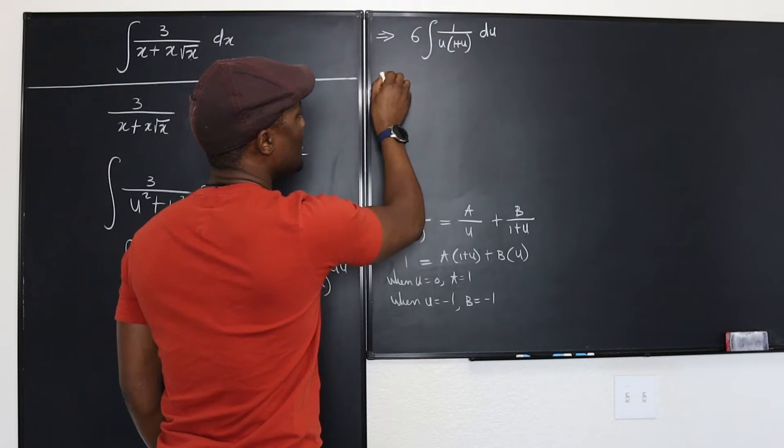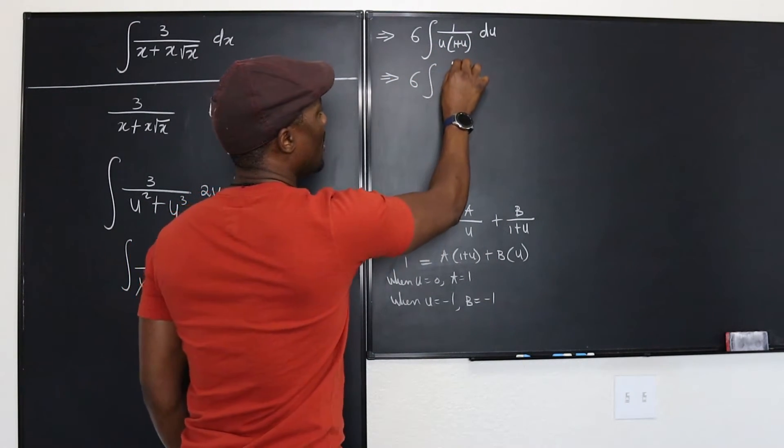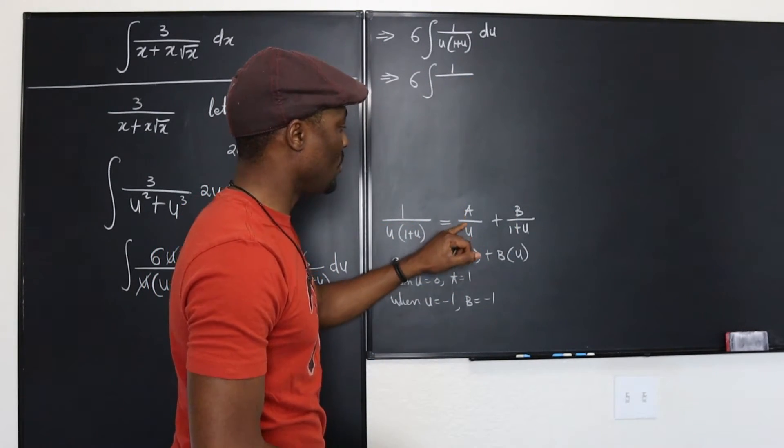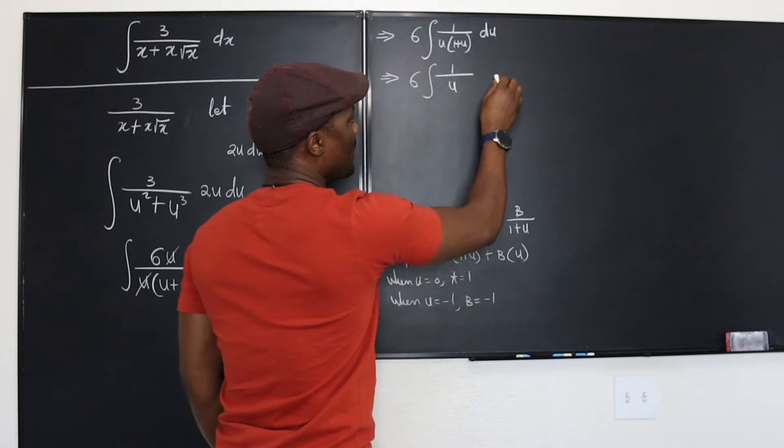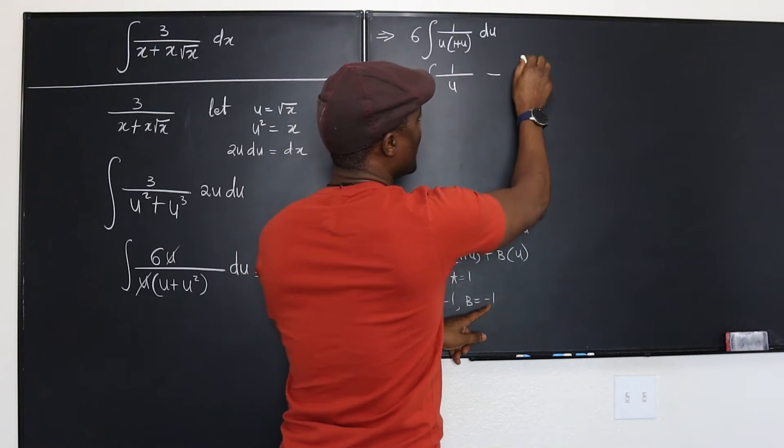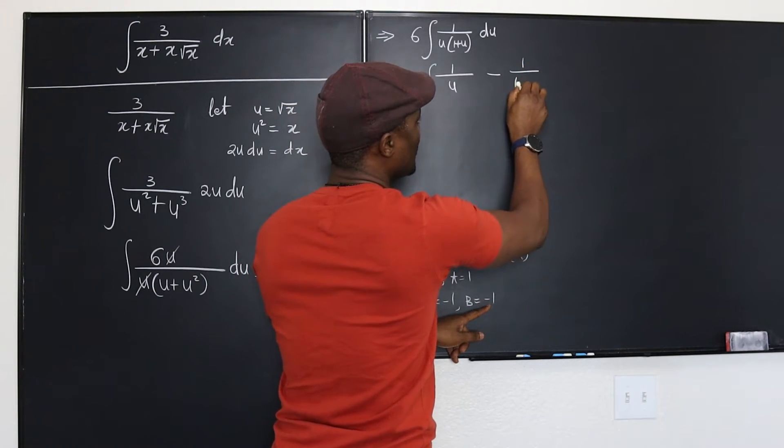So we can actually resolve this into 6 integral of 1 over u - it's A over u, that's 1 over u - minus because this is negative 1, minus 1 over 1 plus u. That's it, du.